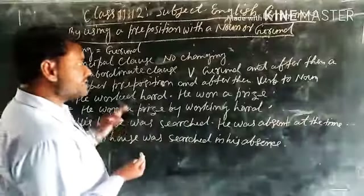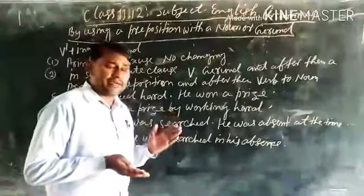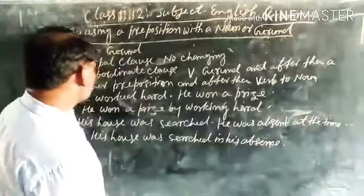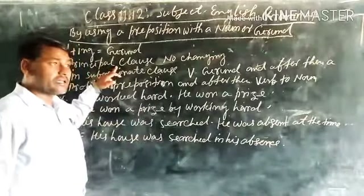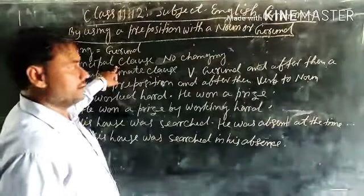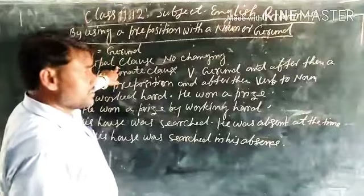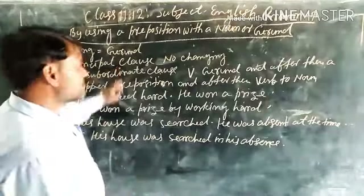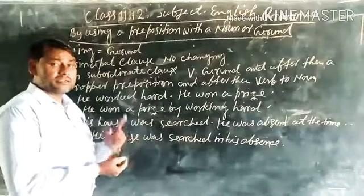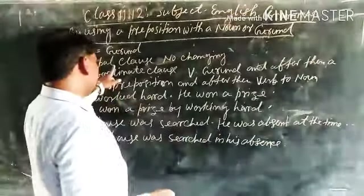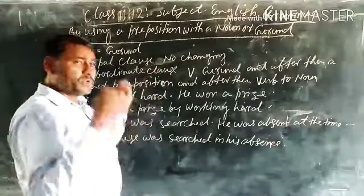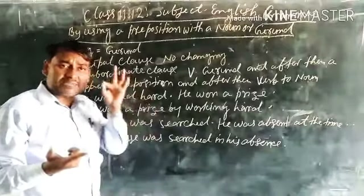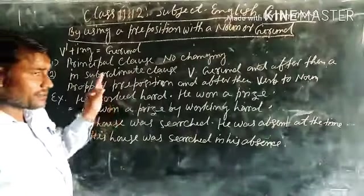You have to know in this chapter, first of all, that in every sentence there are two parts — two clauses: one principal clause and one subordinate clause. In this topic, you may find two sentences. One sentence is the principal clause and the second is the subordinate clause. You have to know which sentence is the principal clause and which sentence is the subordinate clause.